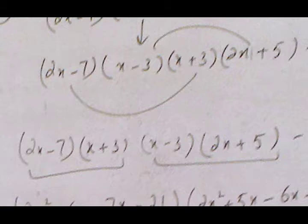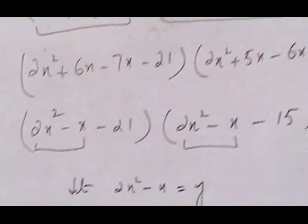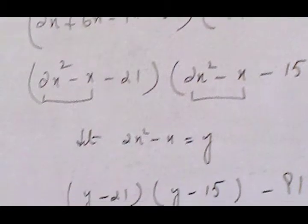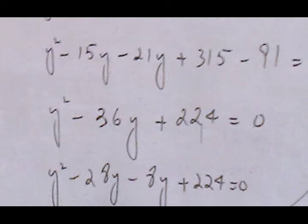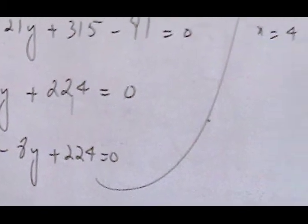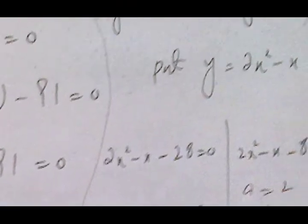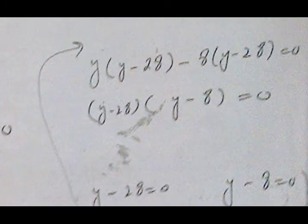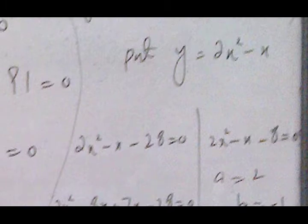We multiply (2x minus 7)(x plus 3) and (x minus 3)(2x plus 5), then arrange these values and let 2x² minus x equal y. The resulting quadratic equation has factors giving 2, 4, 28, and minus 8. One factor gives y minus 28 equals 0 and the other gives y minus 8 equals 0. We put y equals 2x² minus x and apply the quadratic formula or factorize to get the answer.